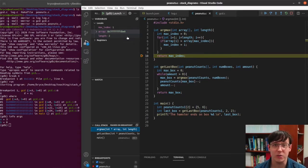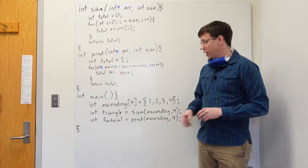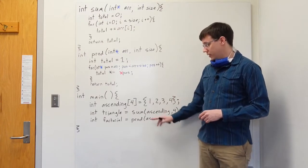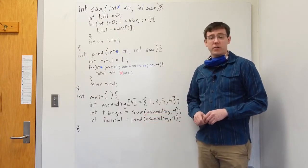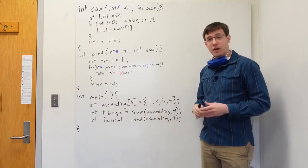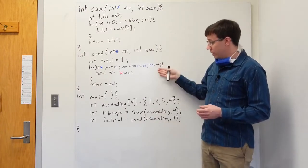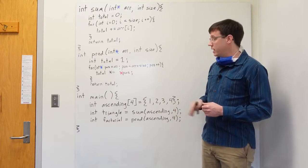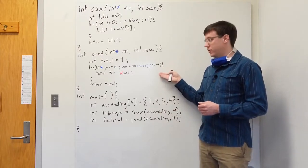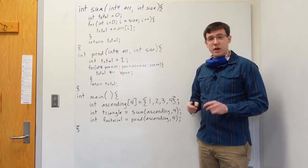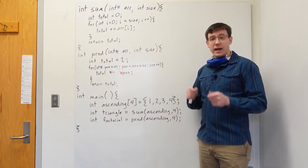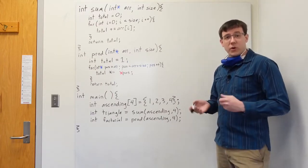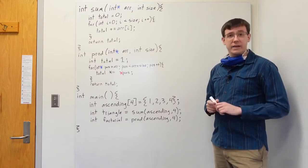Let's go back to the whiteboard and look at some more stack diagrams. In this program, our main function has an array of four integers, and then calls two functions to compute the sum and the product of that array of integers. Those two functions, sum and product, each take the array and its size as input, and each operate by looping through the elements of the array to compute their output. But they are implemented slightly differently to highlight the connection between arrays and pointers in C. To see what's going on in each of these functions, let's draw a stack diagram.